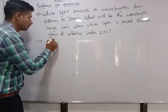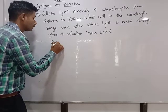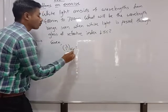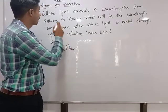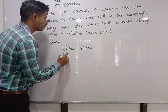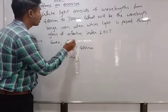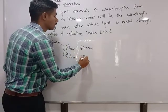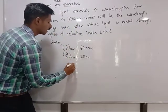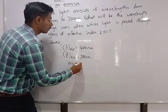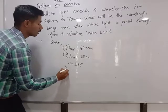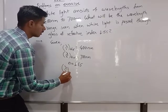Given: wavelength 1 in air (lambda 1 in air) and wavelength 2 in air (lambda 2 in air). The refractive index — denoted as n or mu — of the medium is 1.55. Now we can calculate lambda 1 in the medium.